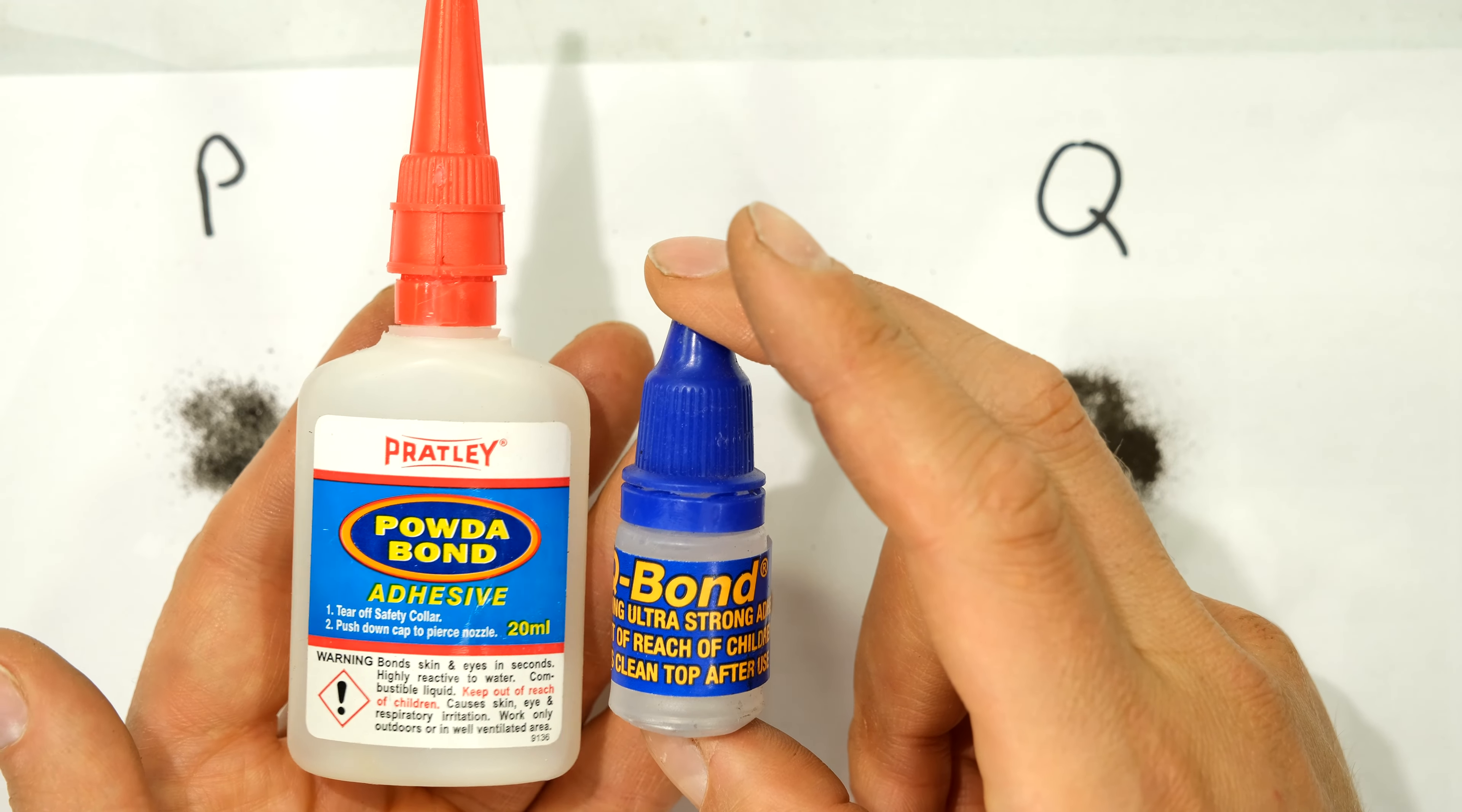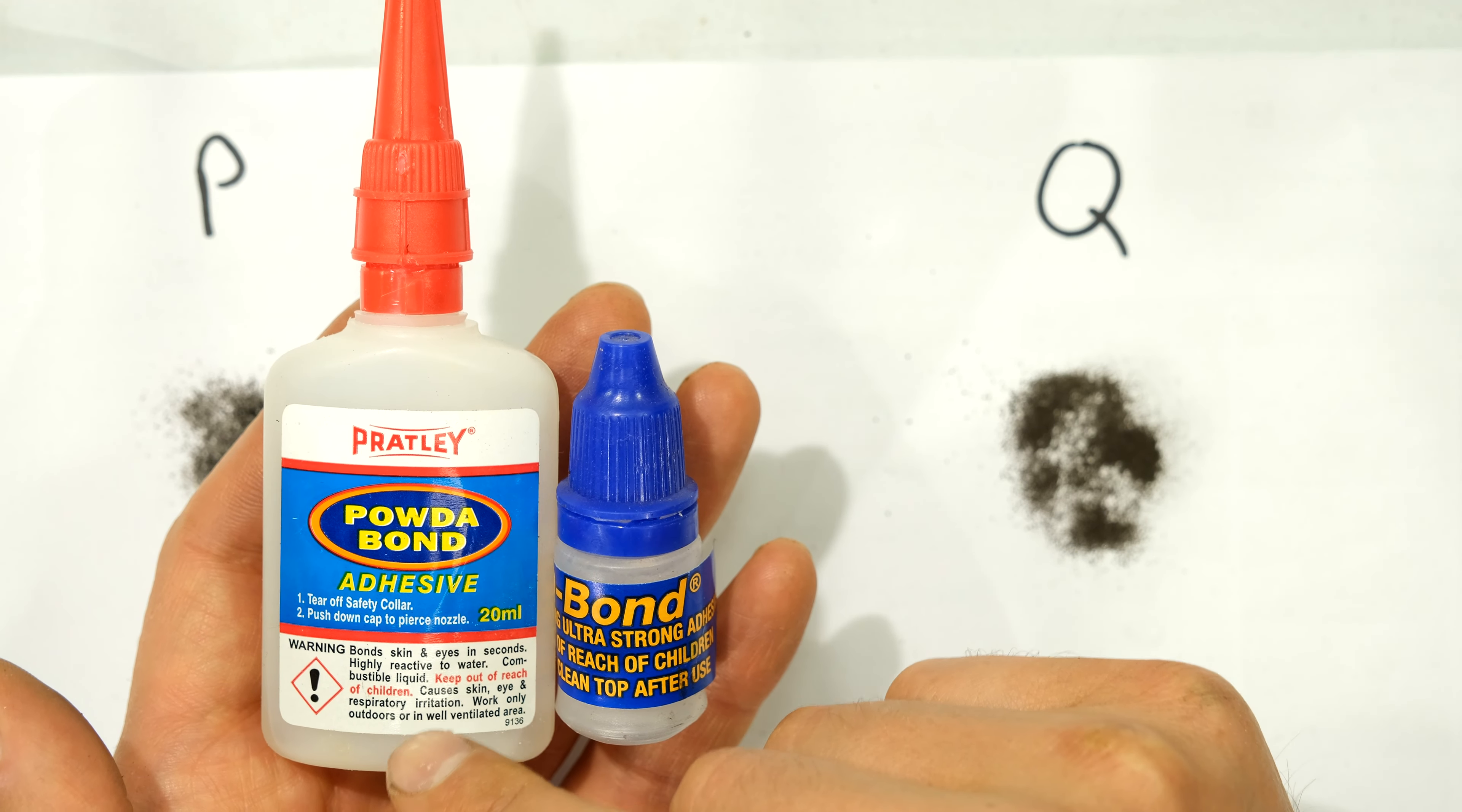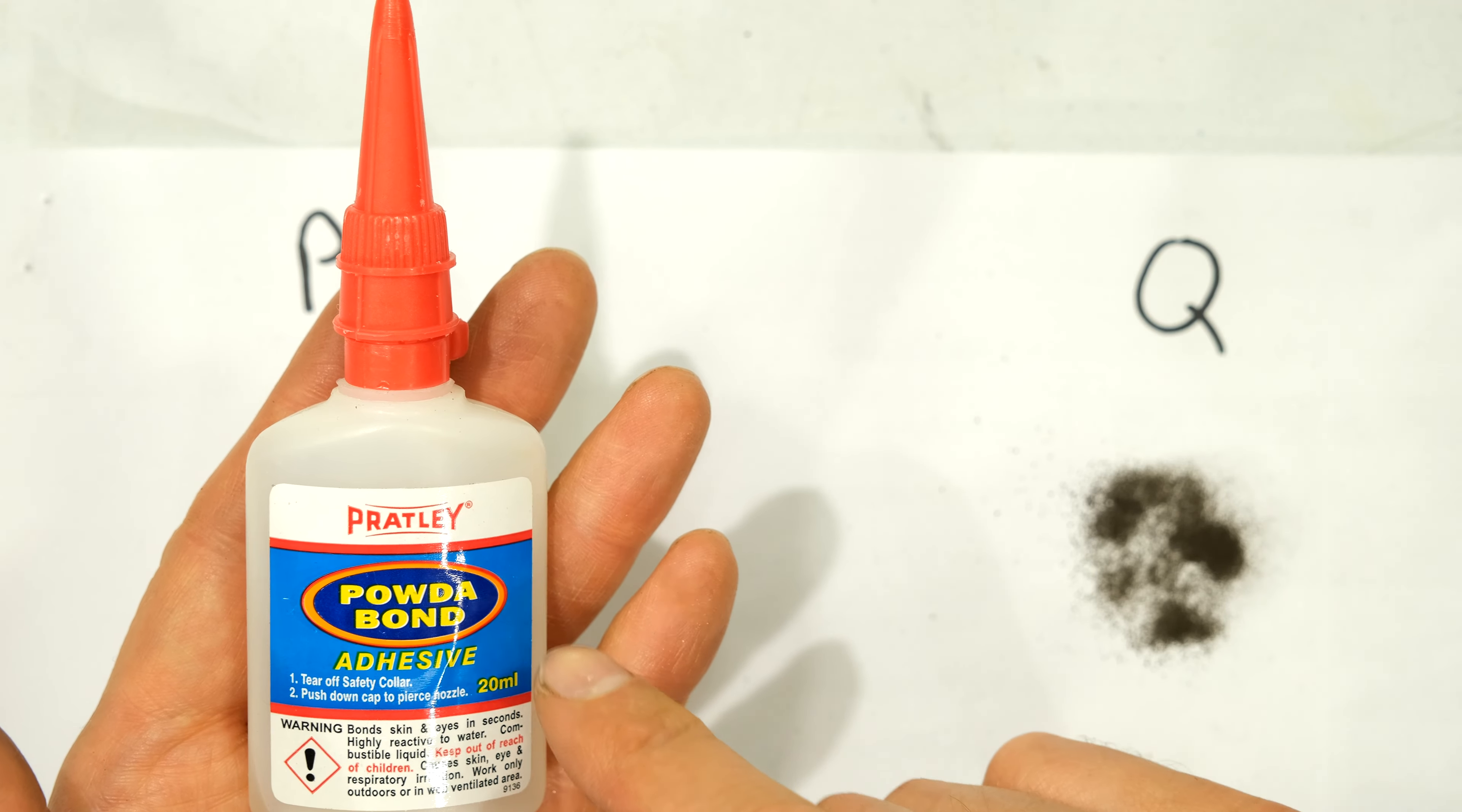Now what about the liquid, the bonding liquid. The Q Bond gives you two of these little bottles each with 10 mils while the Pratley gives you 20 mils so it's the same. What I find is the Pratley bottle for me is much easier to use. So if you have a look at the Pratley even inside there there's a pin and when you put it back on it actually keeps the nozzle open. So if you want to use this over six months I find the Pratley is better.